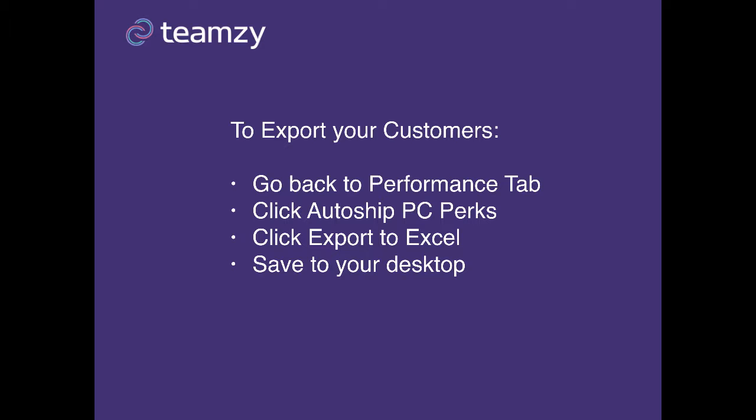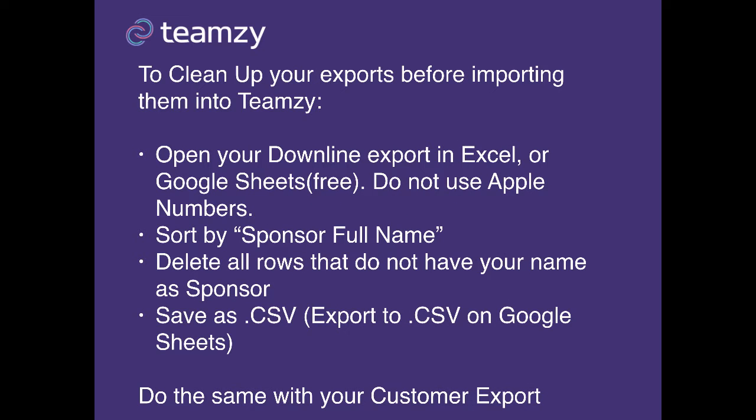Now that we've got those saved, most of the work's done. We just need to do a little bit of cleanup before we import them into Teamsy so that we don't get a bunch of junk data imported. Open your downline export in either Microsoft Excel or Google Sheets. If you're a Mac user like me, do not use Apple Numbers — it does not work for what we need to do here. Just go to Google Sheets at sheets.google.com; you can use that program for free.